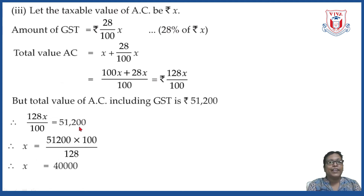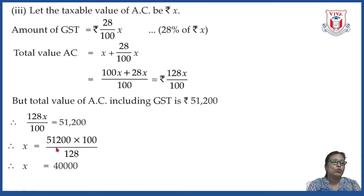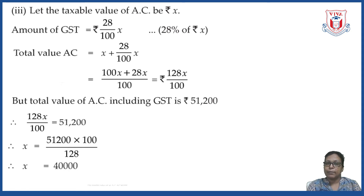From that, we get X equals 51,200 multiplied by 100 divided by 128. Since 512 is exactly divisible by 128 (by a factor of 4), the value of X works out to rupees 40,000. So the taxable value of the AC is rupees 40,000.